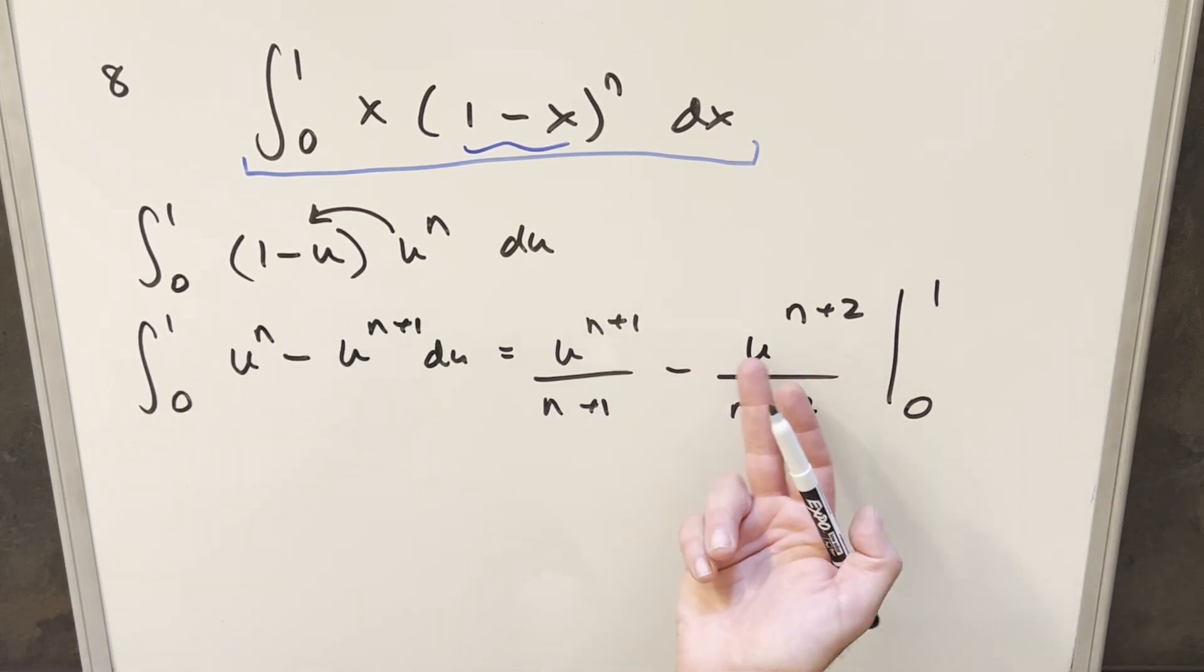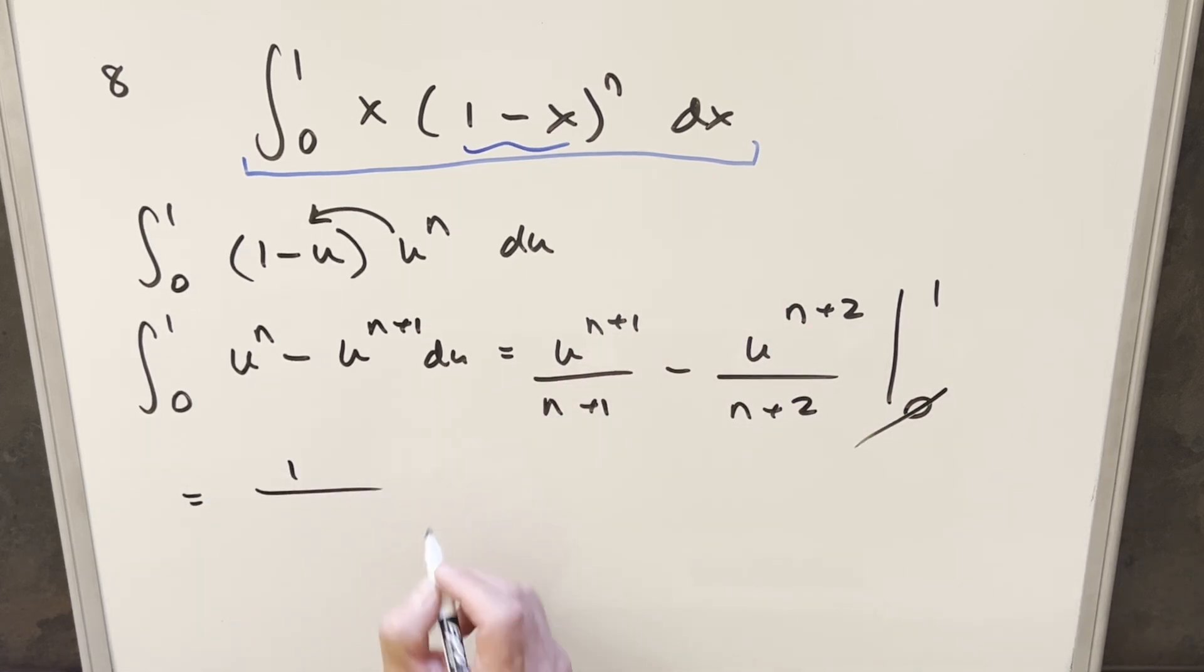Well, we plug in 0s. That's going to be nothing with the u's and the numerators. So don't worry about that. We plug in 1. 1 to the n plus 1 is just 1. So I'm going to write this as 1 over n plus 1 minus 1 over n plus 2. And that's it.